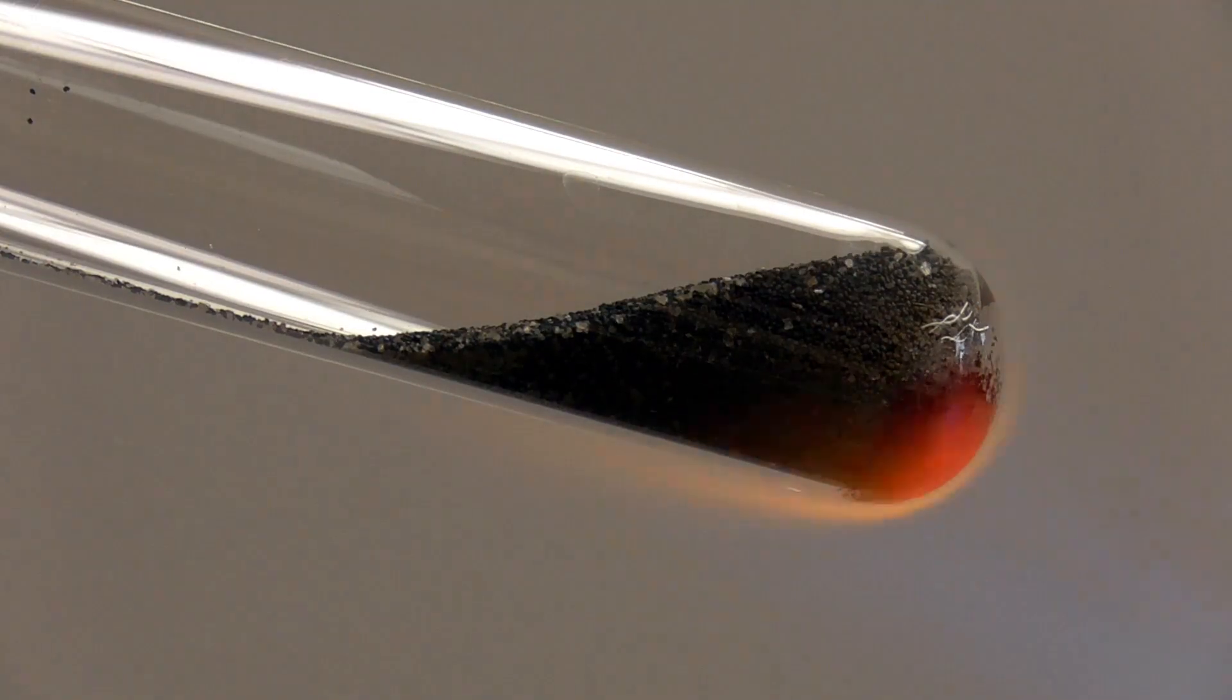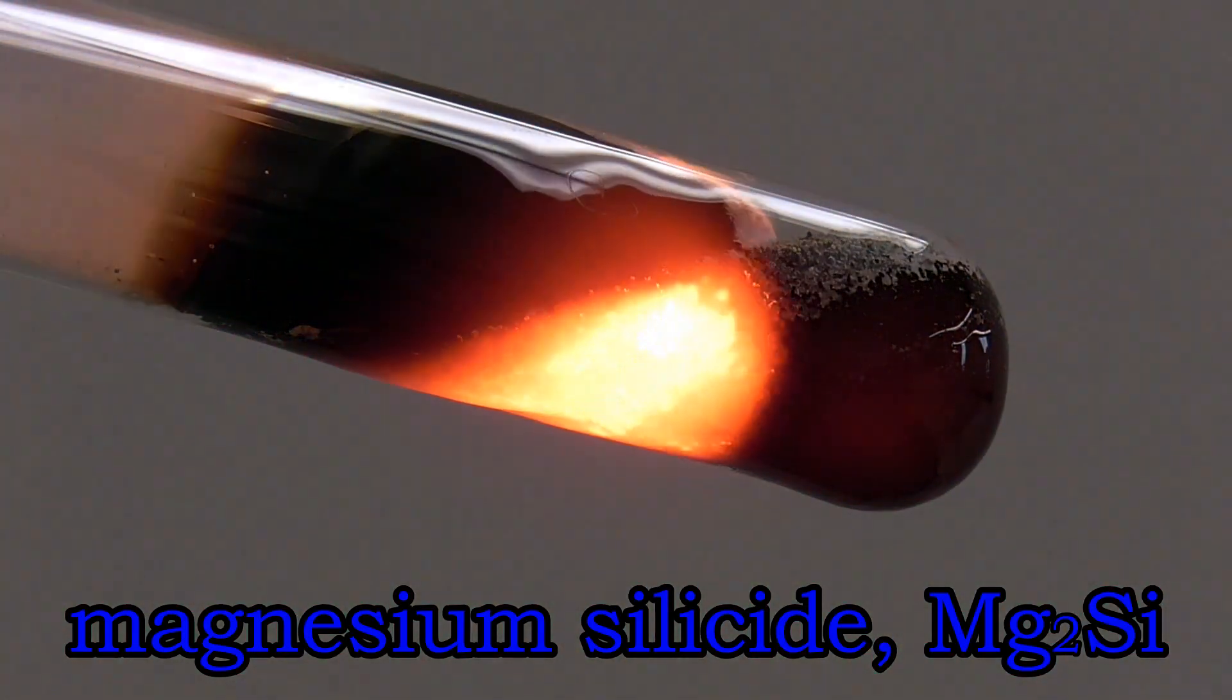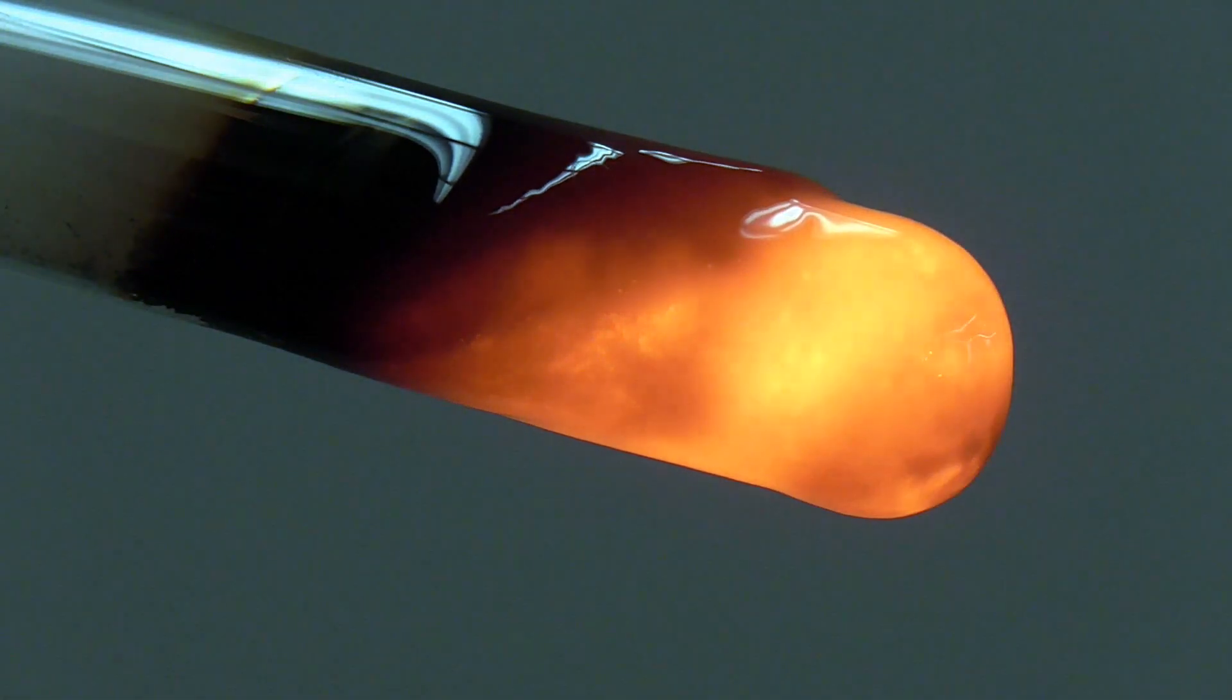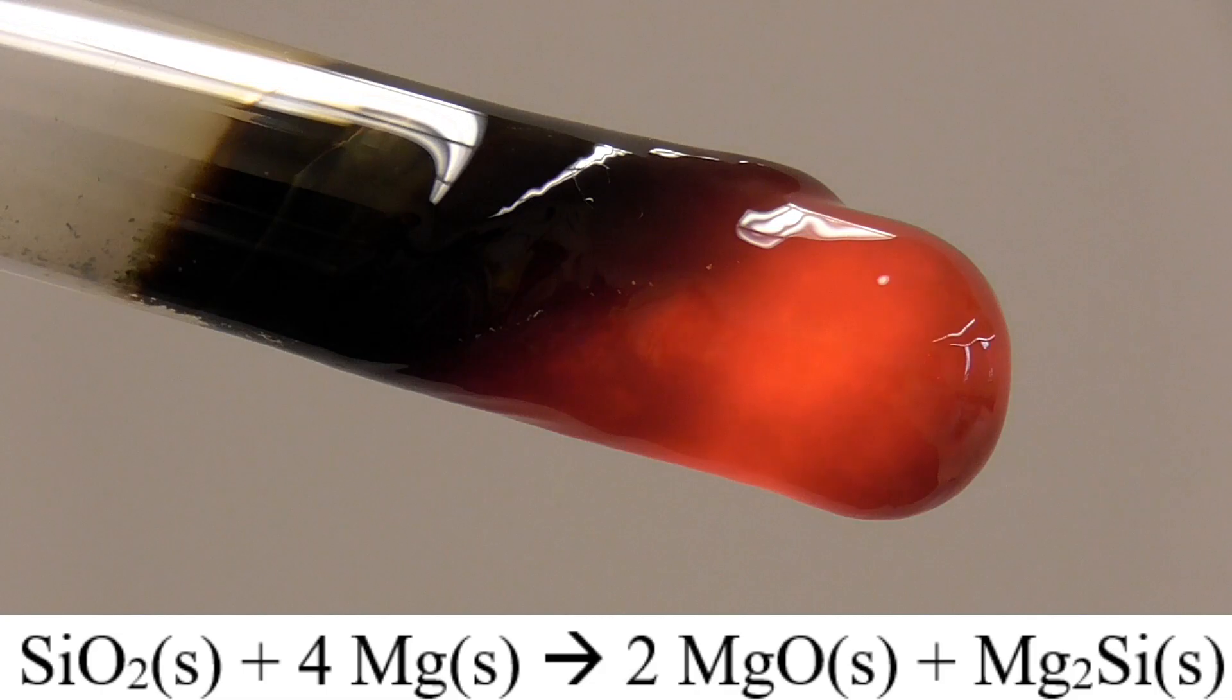In addition, magnesium silicide, or Mg2Si, is also produced due to the chemical reaction you see listed below. Like elemental silicon, magnesium silicide is black in color.